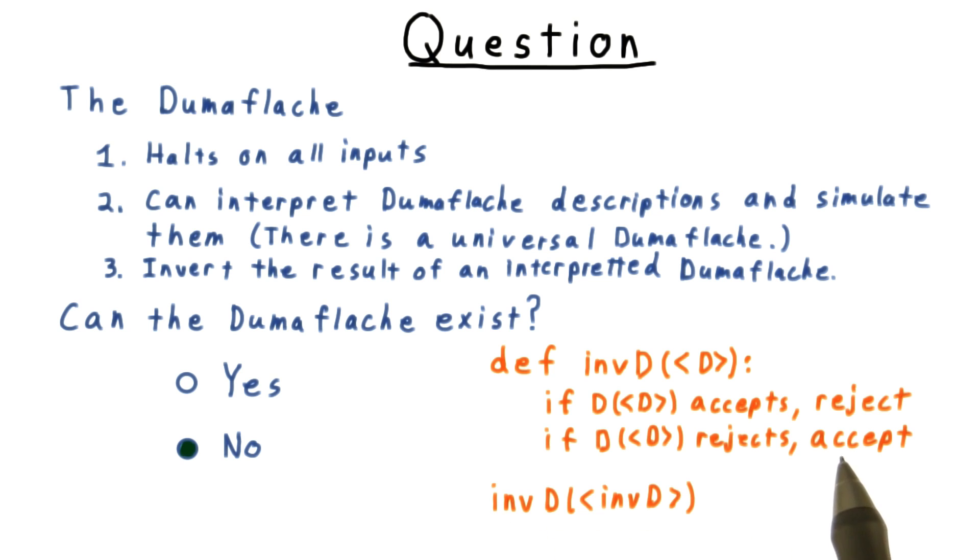If inverse d on itself accepts, well then it must have rejected this time, and that can't have happened. On the other hand, if it rejected, then it must have accepted this time. And that can't happen.